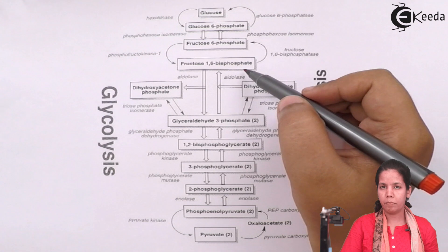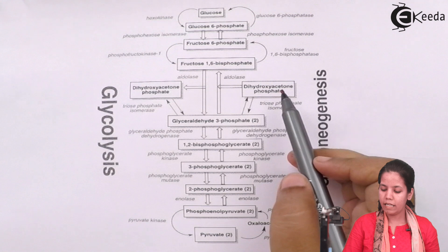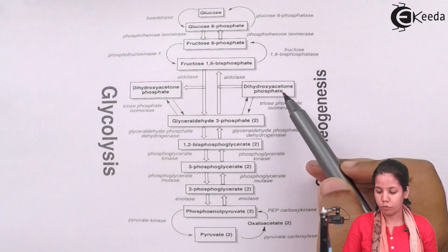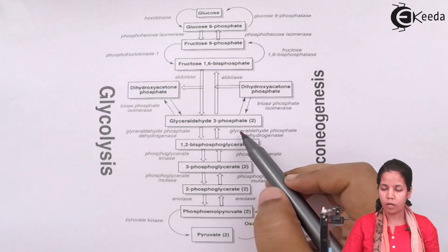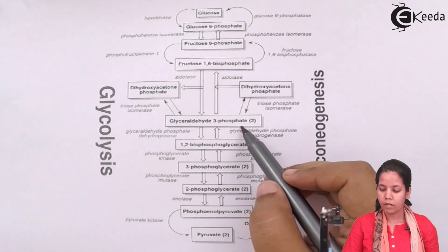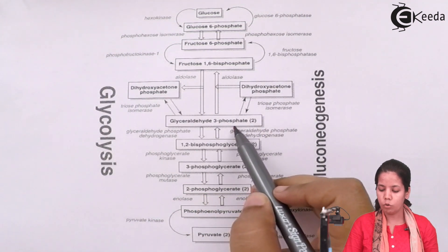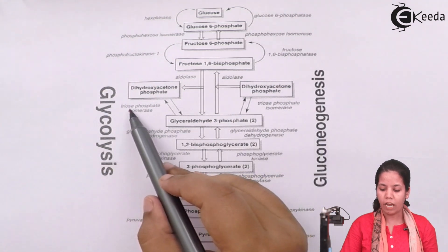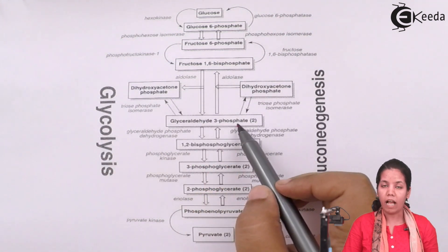Fructose-1,6-bisphosphate immediately splits into two products: dihydroxyacetone phosphate and glyceraldehyde-3-phosphate. Dihydroxyacetone phosphate is a slightly unstable product and is immediately converted into the stable glyceraldehyde-3-phosphate. Since two molecules of fructose-1,6-bisphosphate-derived fragments were formed, two molecules of glyceraldehyde-3-phosphate result. The enzyme used is triose phosphate isomerase, since dihydroxyacetone phosphate and glyceraldehyde are isomers.